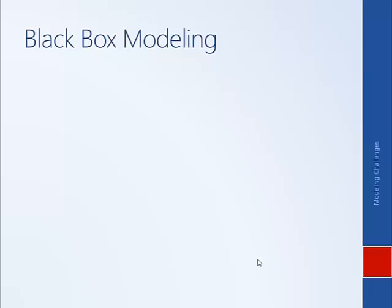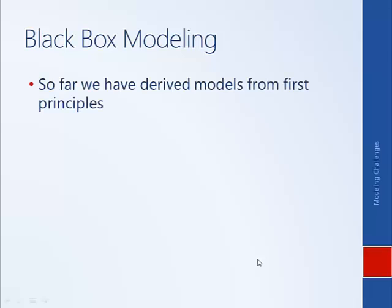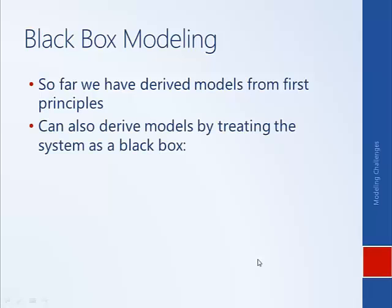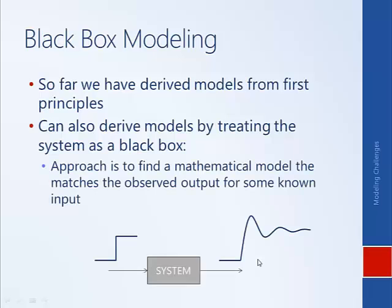Black box modeling is an alternative to deriving models for physical systems from first principles. So instead of using our knowledge of physics — Newton's second law, Kirchhoff's laws — the idea is that we don't understand the physics of the system, or we don't attempt to understand it. Rather, we feed the system a known input, observe the output, and try to fit a mathematical model that will match that output for the given input. Think about what some advantages or disadvantages of a black box modeling approach are as compared to a first principles modeling approach.